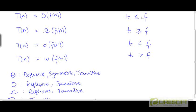The less than or equal to relationship is only reflexive and transitive: t ≤ t, and if t ≤ g and g ≤ h, then t ≤ h. Likewise, t ≥ t, and if t ≥ f and f ≥ g, then t ≥ g.